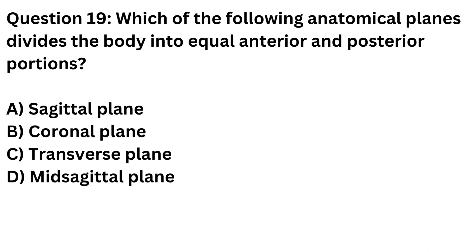Question 19. Which of the following anatomical planes divides the body into equal anterior and posterior portions? A. Sagittal plane. B. Coronal plane. C. Transverse plane. D. Mid-sagittal plane.